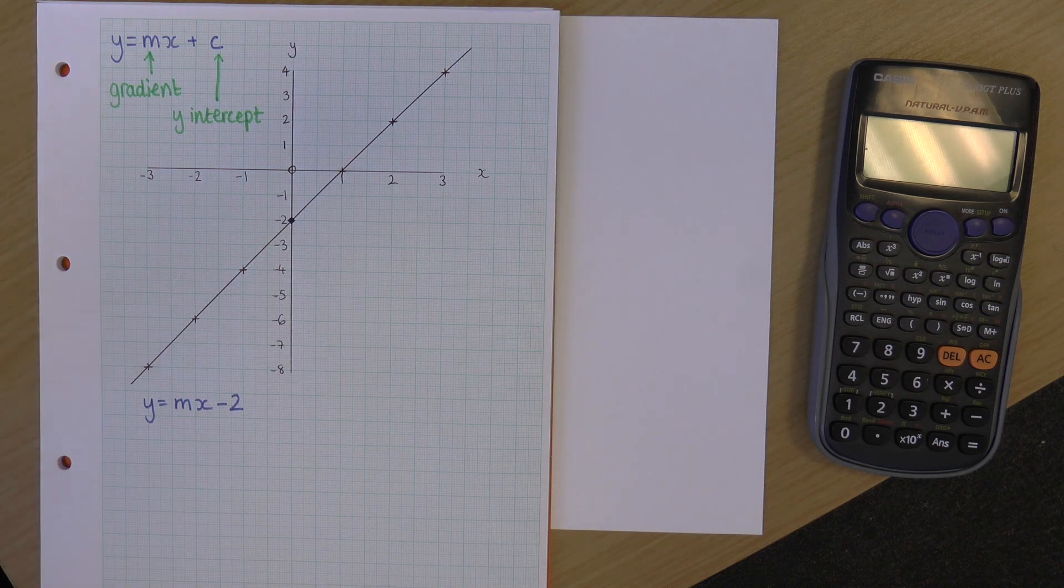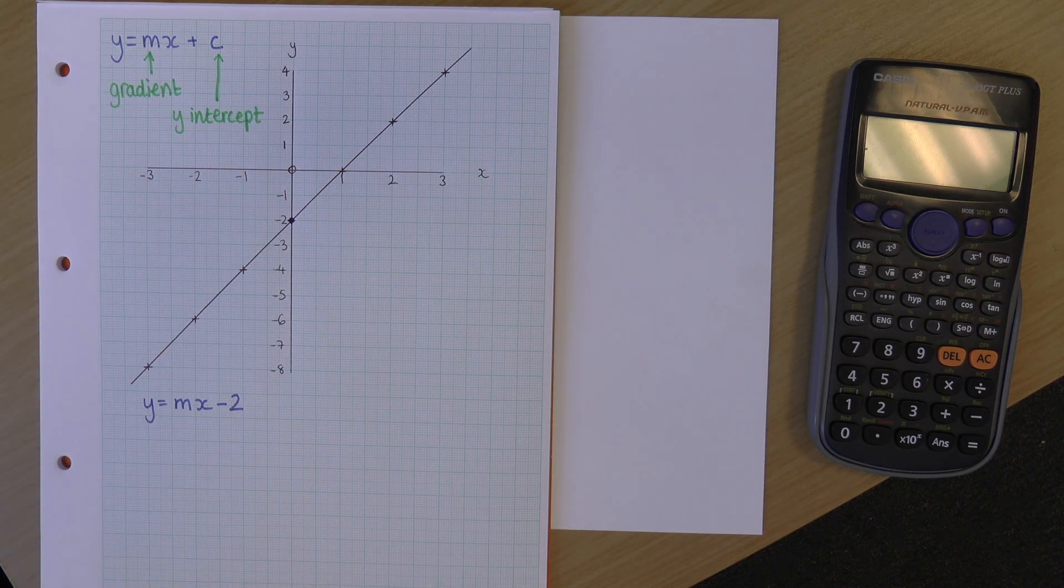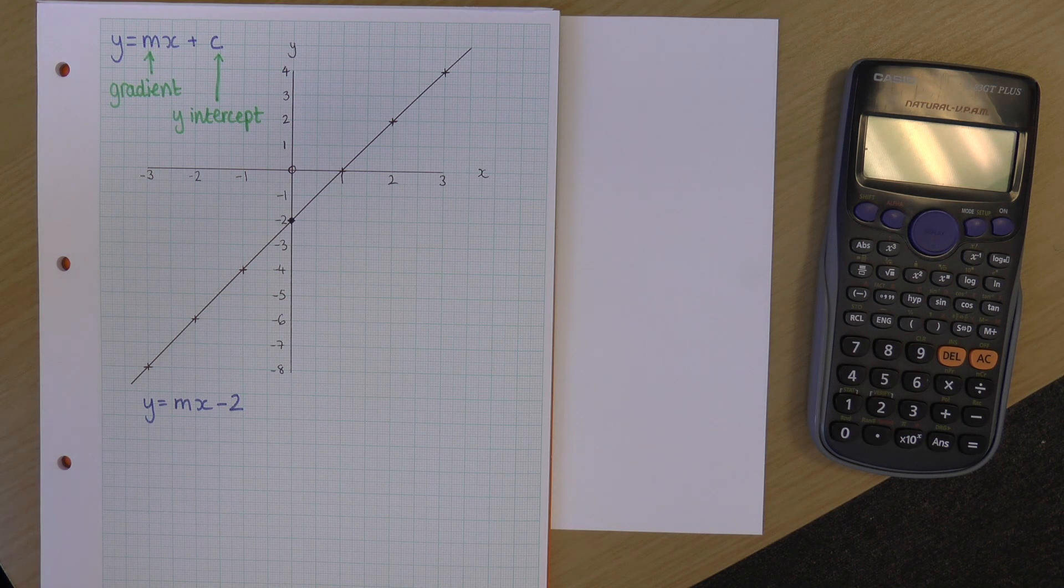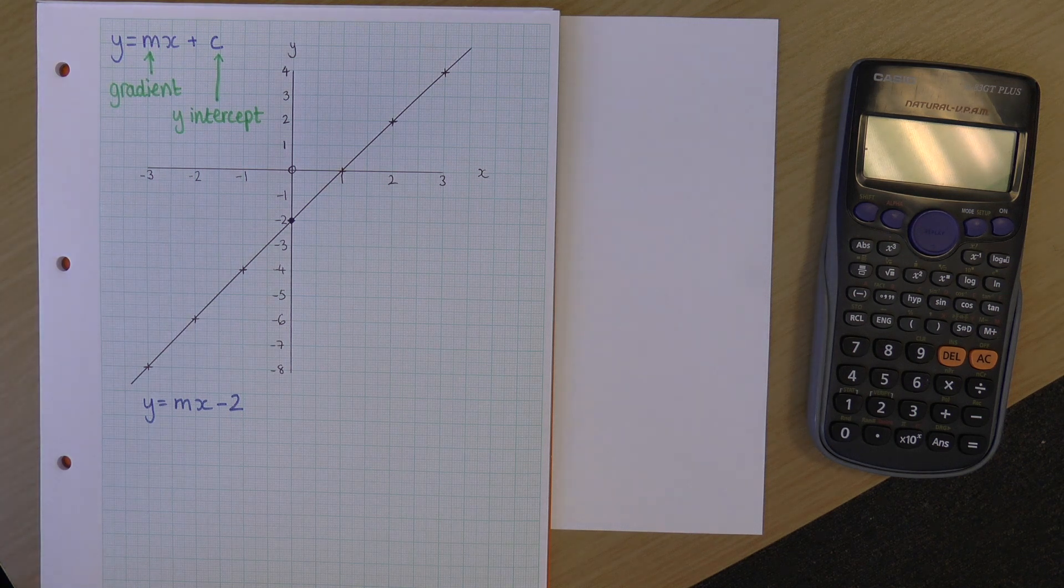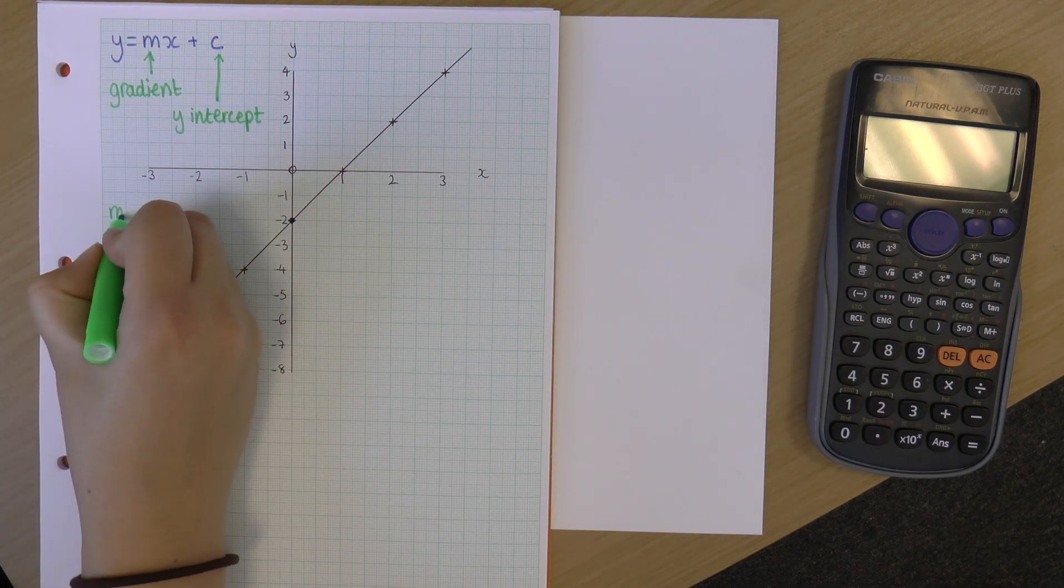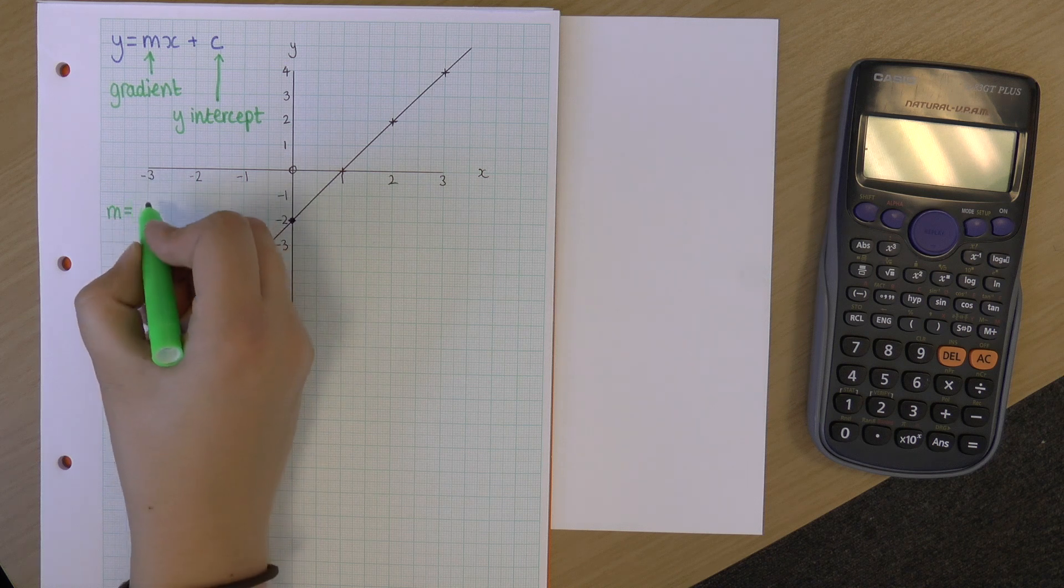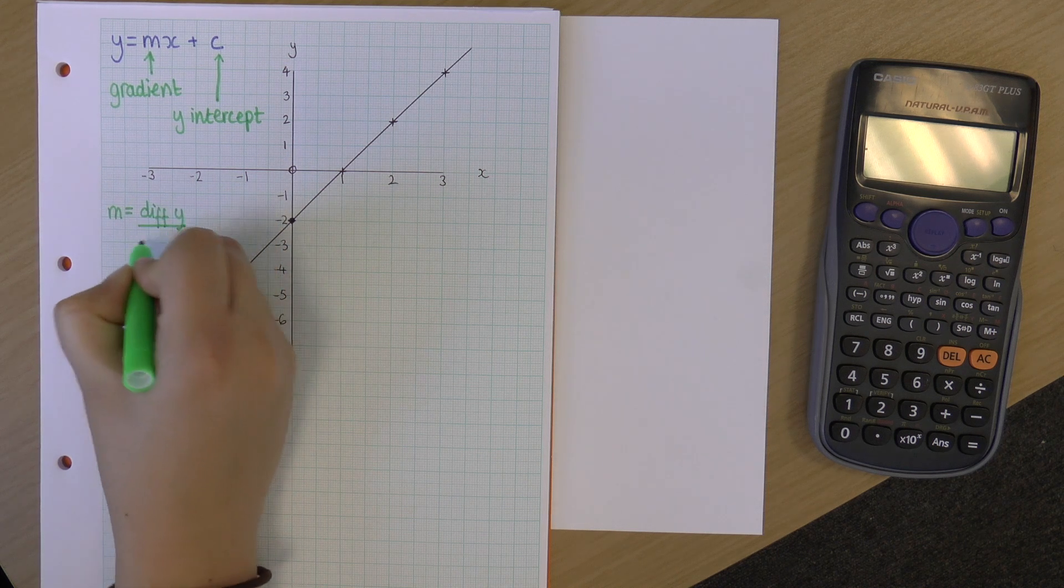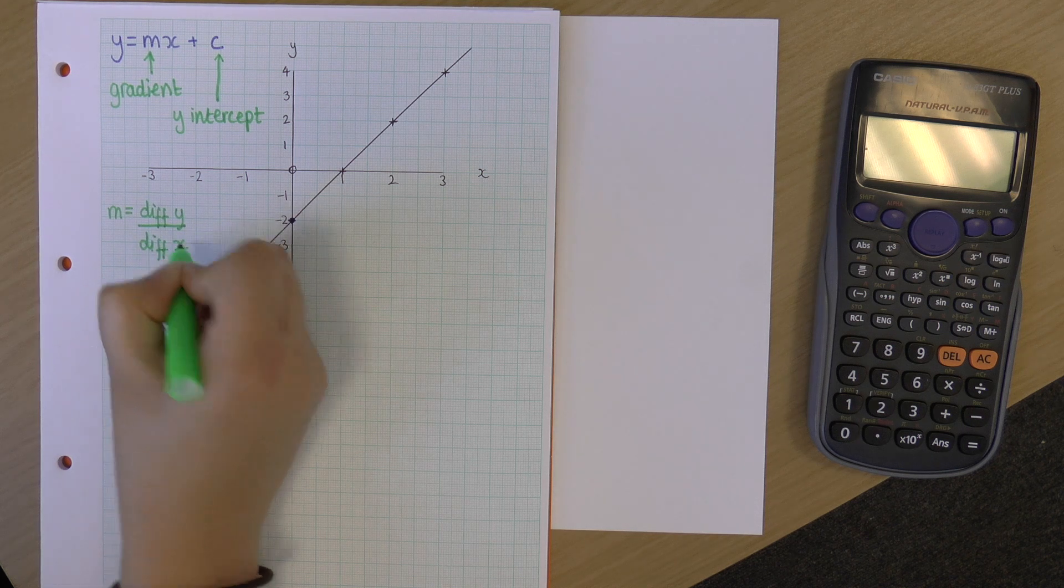So now let's have a look at how we're going to find the gradient. Now, we have an equation for finding the gradient, and that is that the gradient is equal to the difference in y divided by the difference in x.